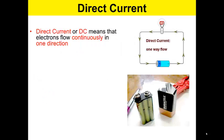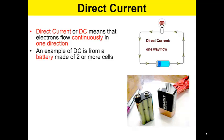There are two types of current when you plug something in. The first is DC or direct current. It typically means that electrons flow continuously in one direction. An example of direct current is a battery. So that's made up of two or more cells. I know what a battery is, but what is a cell?